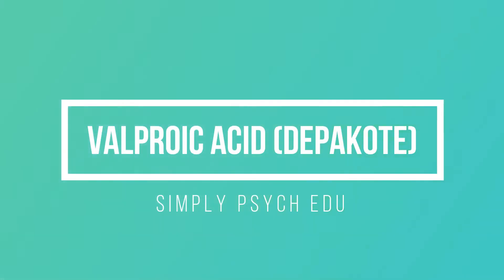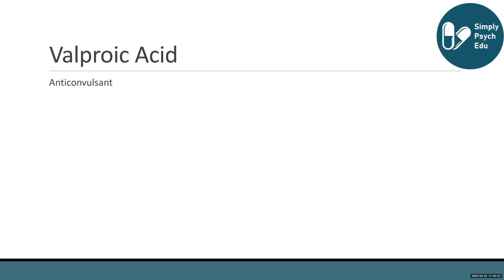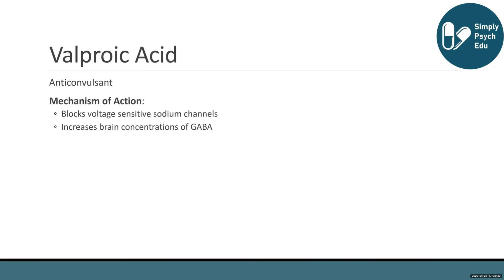Moving on to valproic acid. Valproic acid, or Depakote, is an anticonvulsant or anti-seizure medication. The mechanism of action is really unknown in terms of its therapeutic effect in mania, but the proposed mechanism of action is that it blocks voltage-sensitive sodium channels and increases brain concentrations of GABA.